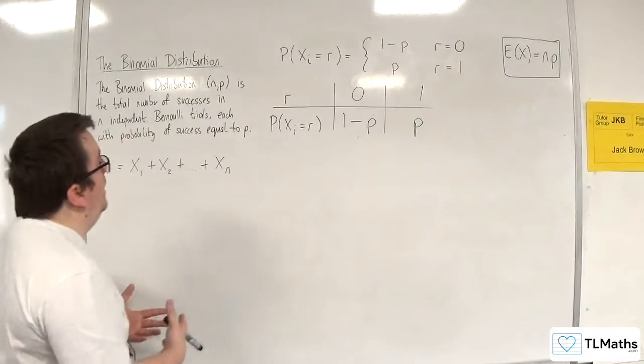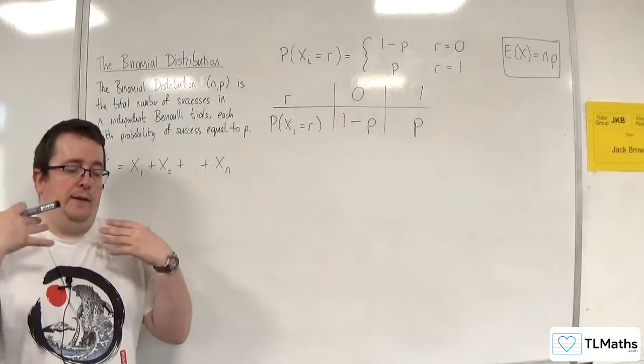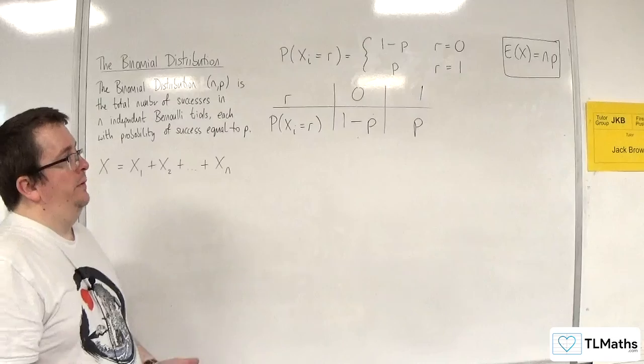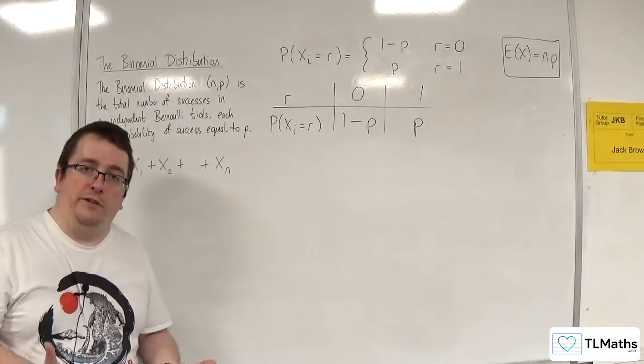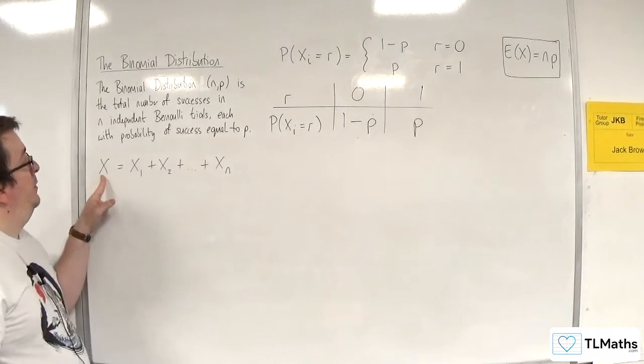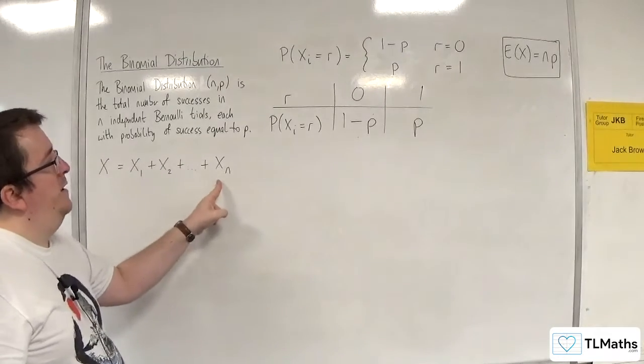In the previous video, I introduced you to the binomial distribution. It is the sum of n independent Bernoulli trials, where the Bernoulli trial is a special case of the binomial distribution when n equals 1. X is the binomial distribution and is the sum of n independent Bernoulli trials.